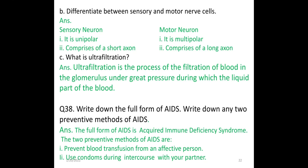What is ultrafiltration? Ultrafiltration is a process of filtration of blood in the glomerulus under great pressure, during which the liquid part of the blood is filtered.